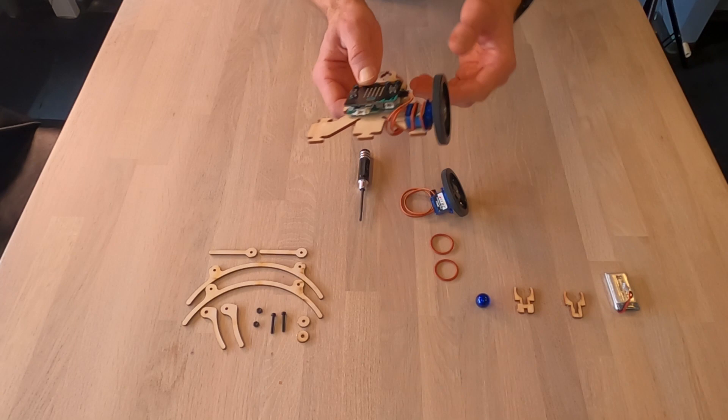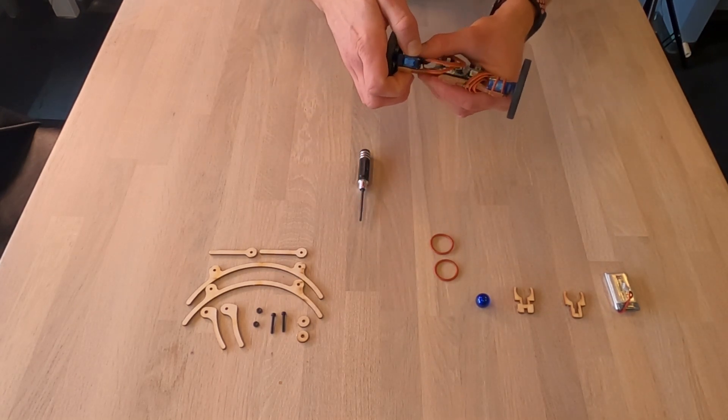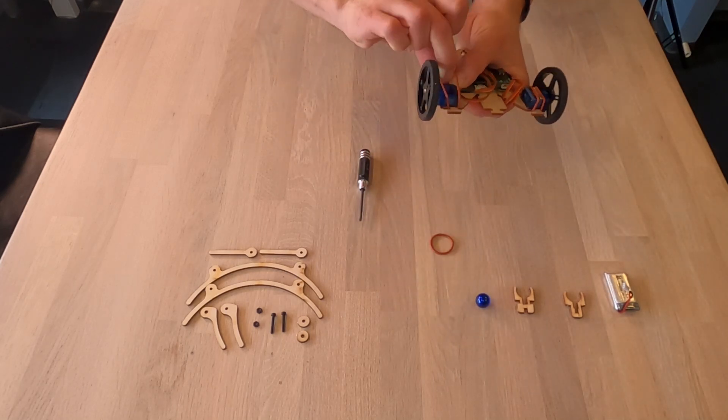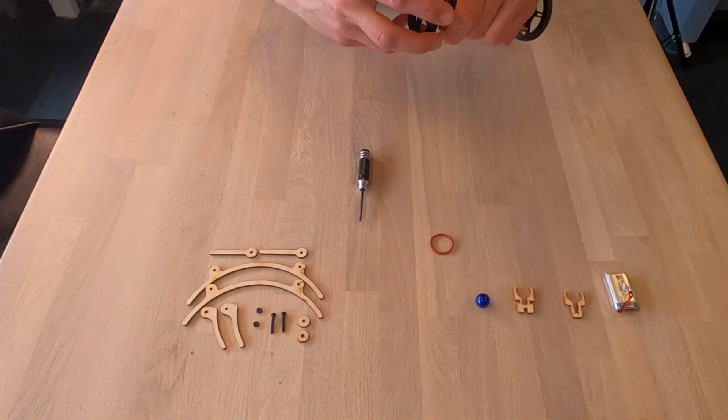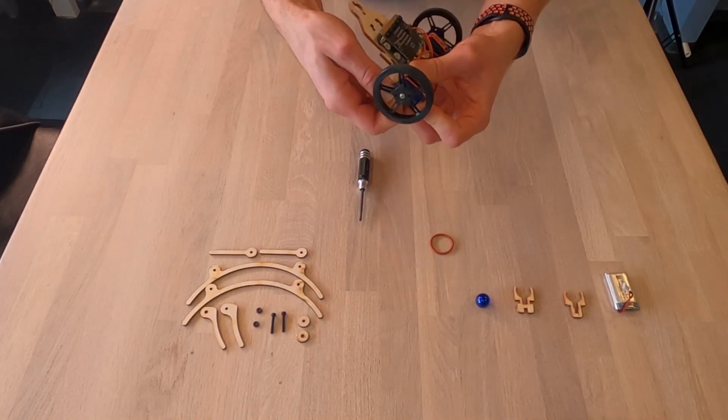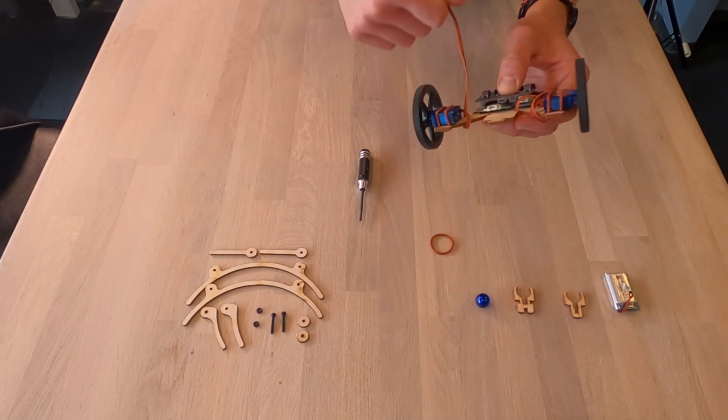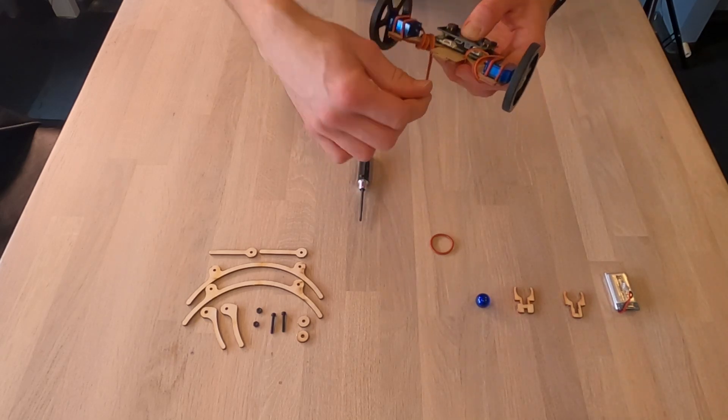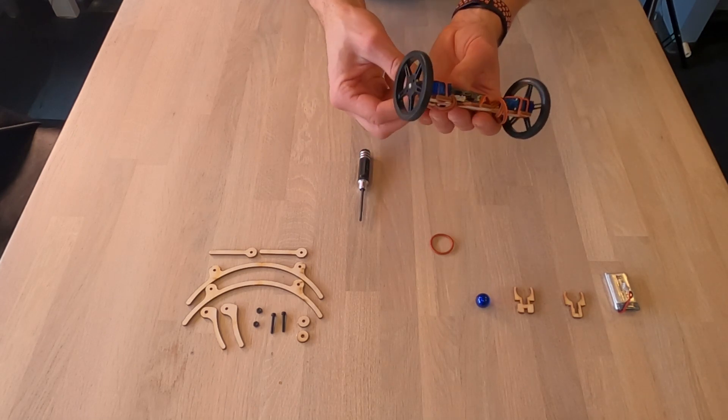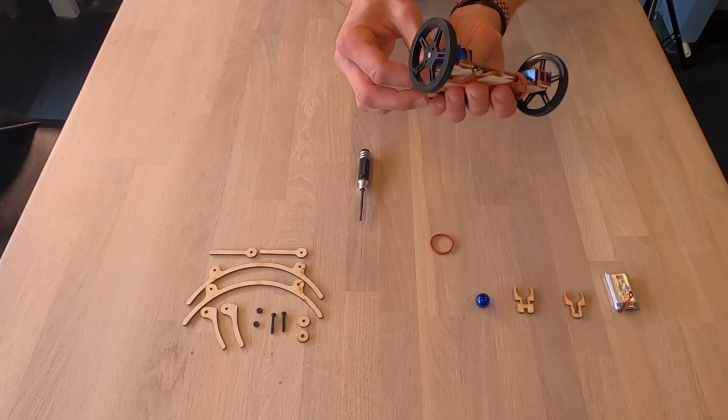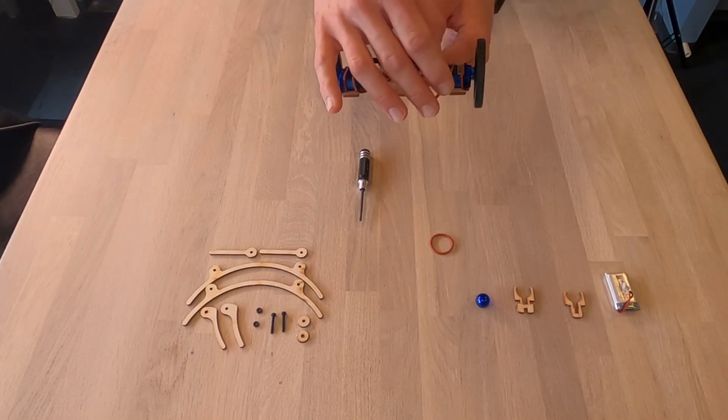So now this side is mounted. Then I'm going to take the other side. Same procedure. Now this one is mounted. Then I start turning the wire around the arm. So now it's firmly tight. The yellow one up and the brown down. Move it into the card. So now the servos on both sides are correctly mounted.